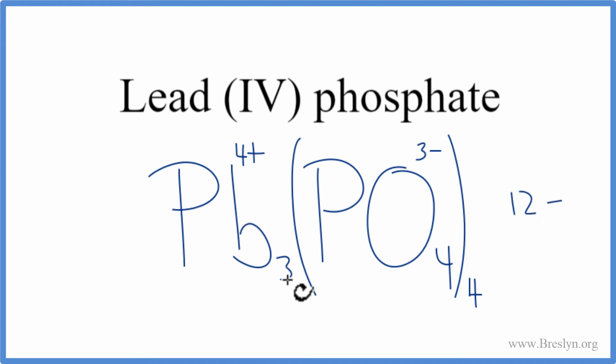The leads, we have three. Each one's four plus. Three times four, that's twelve plus. So twelve plus and twelve minus, that adds up to zero. So this is the correct formula for lead four phosphate.